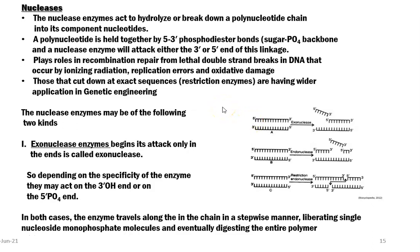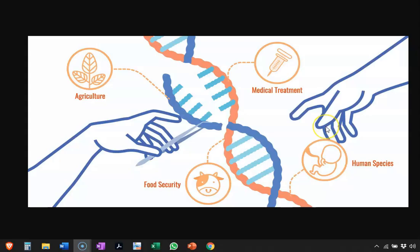Nucleases have a role in recombinational repair. Lethal double-strand breaks in the DNA need to be repaired when a particular DNA is mutated, there is a change in base sequence, or damage occurs through ionizing radiation, replication error, or oxidative damage. That particular portion of the nucleotide needs to be cut, removed, and replaced. There are also specific nucleases that can cut at exact sequences — these are referred to as restriction enzymes, which have wide application in the field of genetic engineering.